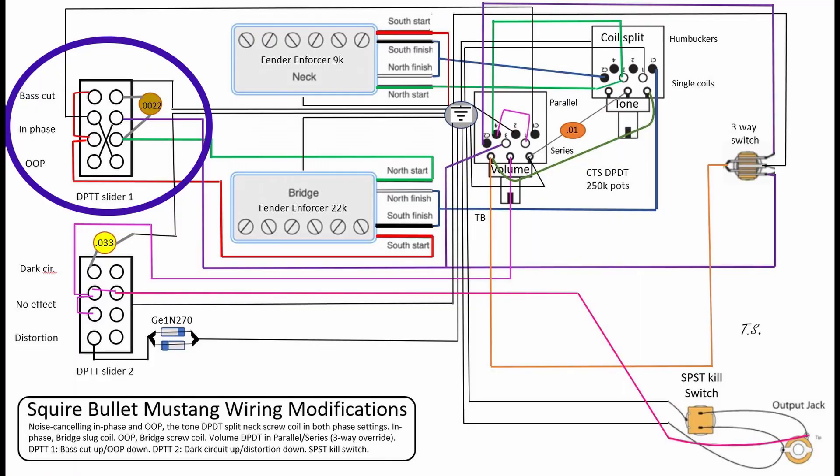All right, so let's talk about what's going on here. Why don't we start with the top left, the DPDT slider 1, with the base cut in phase and OOP, which stands for out of phase. On the top here is the base cut. So basically, what's happening when you move the slider up, you run the north start then through the 0.022 capacitor, which only allows really treble sounds to pass through it and cuts a lot of the base. And then it'll travel back through the purple wire here, which goes all the way to your three-way switch.